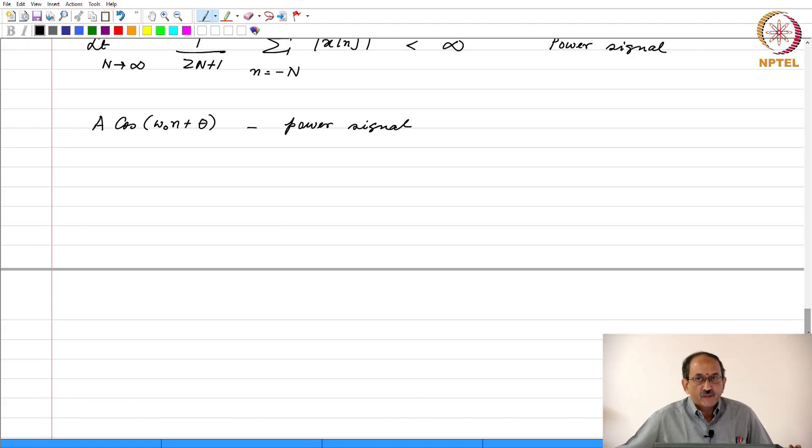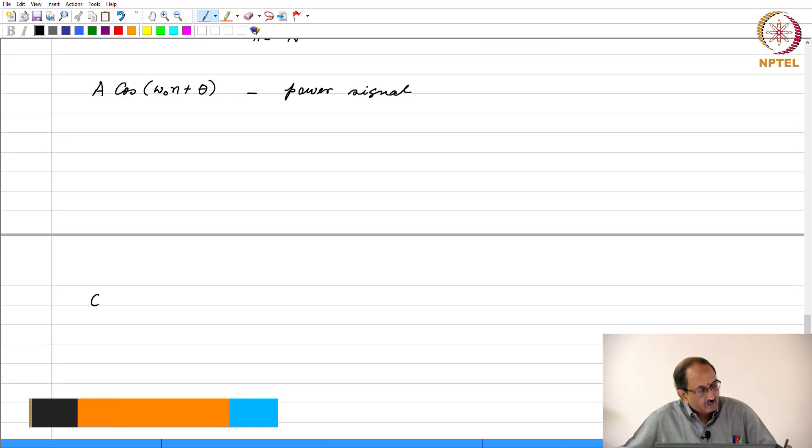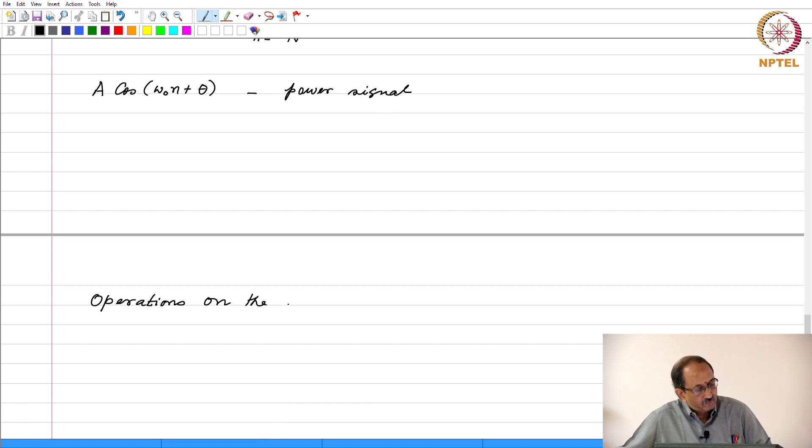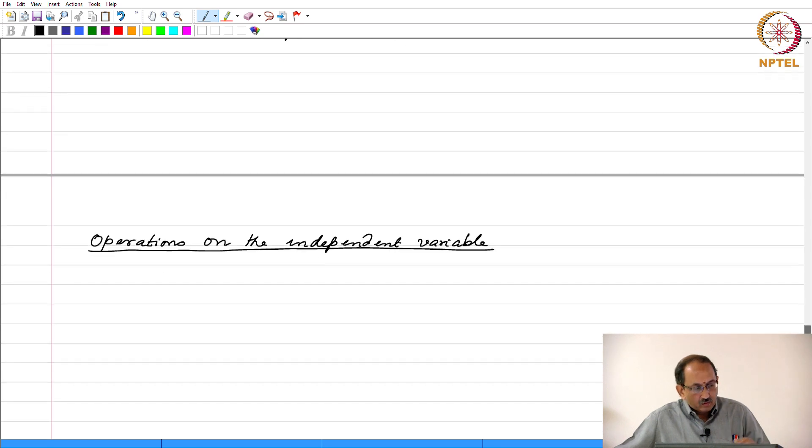Let us now focus on the operations on the independent variable. The most common operation that you encounter when it comes to operations on the independent variable is what is called the affine transform.